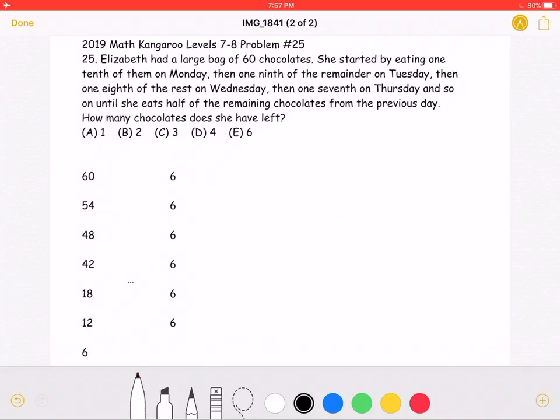To start, Elizabeth starts with a bag of 60 chocolates. The problem states that she started by eating one-tenth of the candies on Monday. So on Monday, if she eats one-tenth of the 60 chocolates, she will be eating six chocolates. If we subtract six from 60, we will see that she has a remaining 54 chocolates.